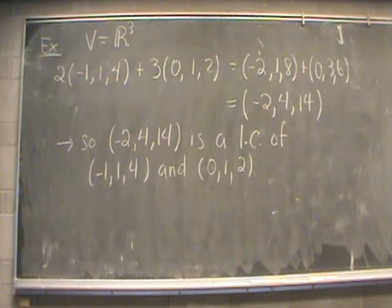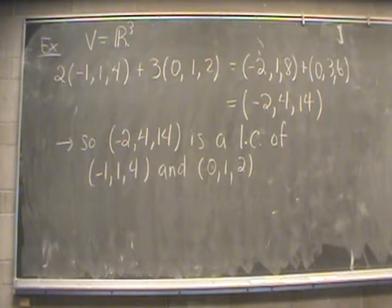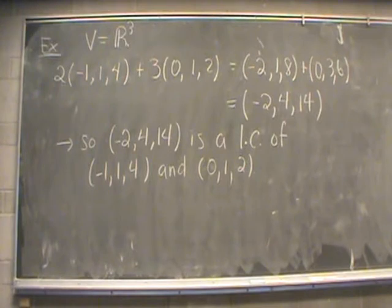Here are a couple of examples of this idea of linear combination. First, in the vector space R3: if we do 2 times the first vector and add 3 times the second vector, we simplify and get the vector (-2, 4, 14). So we say that (-2, 4, 14) is a linear combination of the two starting vectors (-1, 1, 4) and (0, 1, 2).